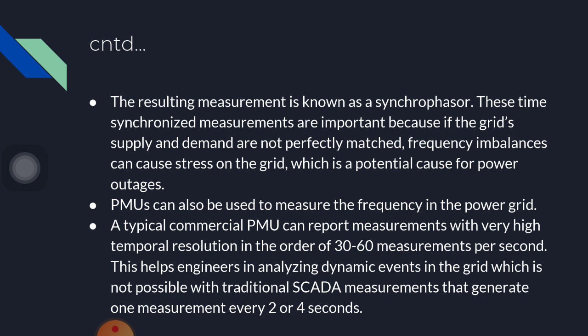These time-synchronized measurements are important because if the grid supply and demand are not perfectly matched, frequency imbalance can cause stress on the grid, which is a potential cause for power outages. PMU can also be used to measure the frequency in the power grid. A typical commercial PMU can report measurements with a very high temporal resolution in the order of 30 to 60 measurements per second. This helps engineers in analyzing dynamic events in the grid, which is not possible with traditional SCADA measurement that generates one measurement every two or four seconds.